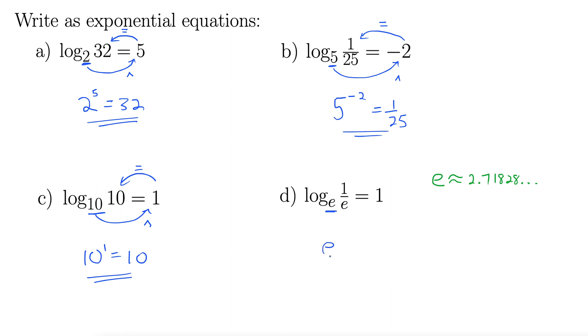Start with the base, e, around to the power. This should be negative 1 right here. It doesn't work unless that's negative 1. So around to the power of negative 1, and then back inside for the equals, 1 over e. I knew it had to be negative 1 because this statement is true, e to the negative 1 is 1 over e. If that would have been positive 1 there, it wouldn't have worked out.